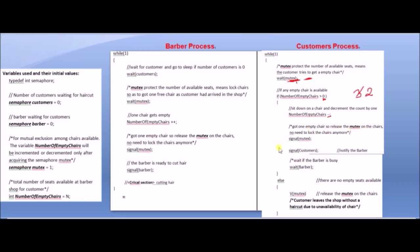After decrementing, signal(mutex) — the customer releases the mutex. So if there is another customer, they can acquire the mutex, check the number of empty chairs, and decrement it. Signal(mutex) unlocks and releases access to the number of empty chairs so that another process can use it.